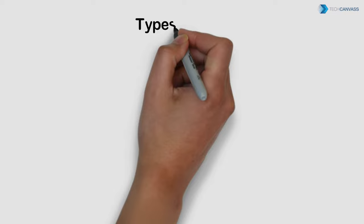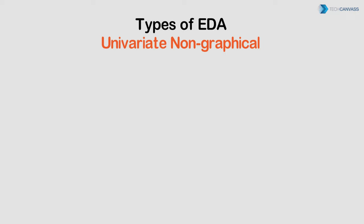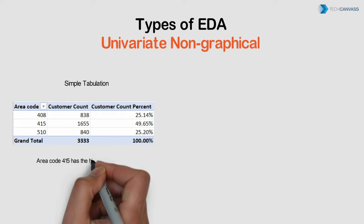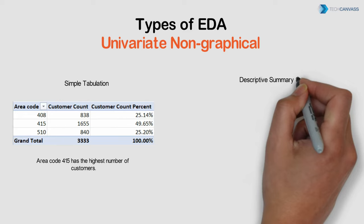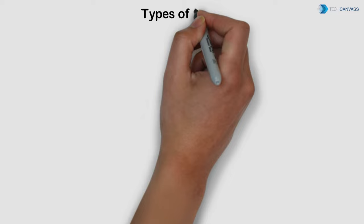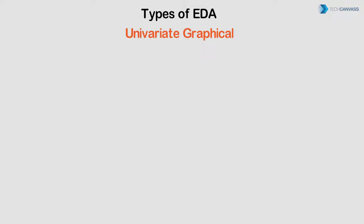They start with univariate analysis, which looks at single variables like age and salary. For categorical variables like area code, a simple tabulation of the frequency of each category is helpful. They find that area code 415 has the highest number of customers. For numerical variables, they use descriptive statistics summaries to get details like mean, mode, and standard deviation — which tells them there are some missing values that need to be resolved before analysis.